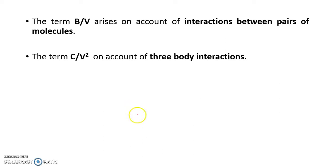The term b by v arises on account of the interaction between a pair of molecules, so it is called second Virial Coefficient. And c upon v square arises on account of three body interactions or three molecular interactions simultaneously, so it is called third Virial Coefficient.